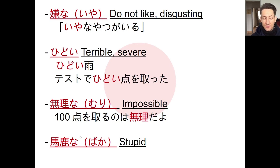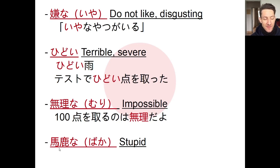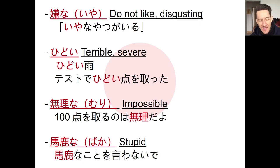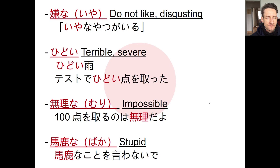Finally, baka — I'm sure even people who don't study Japanese know this word. The kanji are interesting: the first character is horse, the second is deer — so horse plus deer means stupid. Supposedly a stupid person can't tell the difference between a horse and a deer. If you know the origin story, share it in the comments! You can also use baka as a na-adjective: baka no koto wo iwanai de — don't say stupid things.